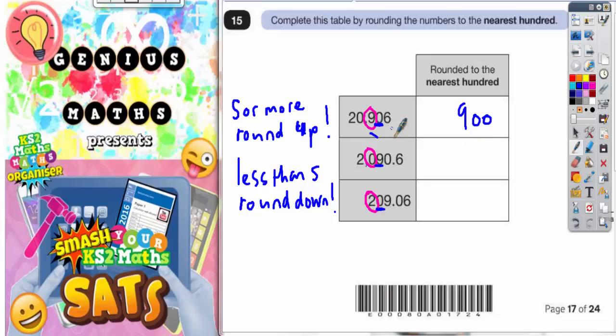Twenty thousand off, so we need to make sure that we put the twenty thousand at the start. So the nearest hundred is going to be twenty thousand nine hundred.